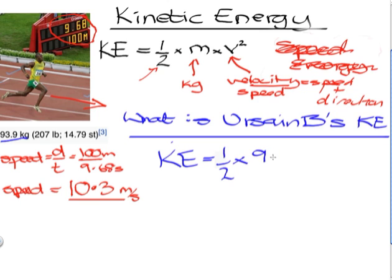And then we're going to take the velocity, and we're going to take the 10.3m per second. But we're going to square that, and it's really important to stress this. You have to square this. You can't times 1/2 by 93.9, times it by 10.3, and then square everything. You get a completely different result.